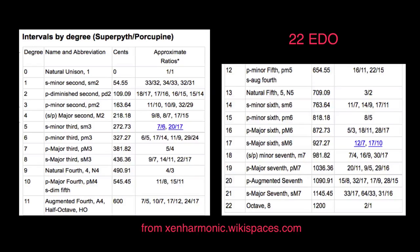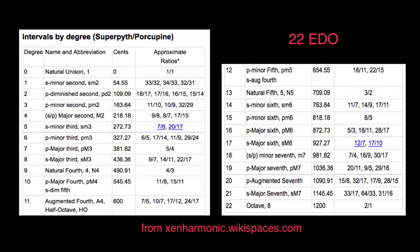Other equal temperaments, such as 22 EDO, can approximate other ratios not offered in 12 EDO, and in some cases can do better. For example, the major third is tuned closer to an exact 5:4 pure major third. You also get the harmonic seventh (7:4), the 11:8, the 7:6, and many others, all tuned close enough to be convincing approximations. Equal temperaments are a compromise, but in return you get the ability to transpose, more available chords and keys, and generally simpler use. They're a lot of fun and definitely worth trying out.